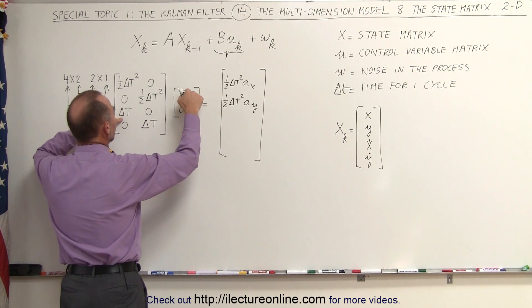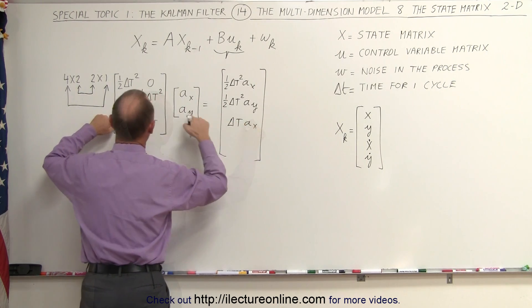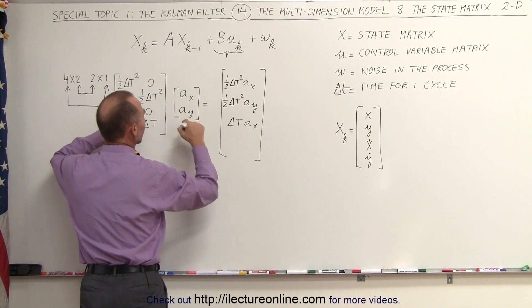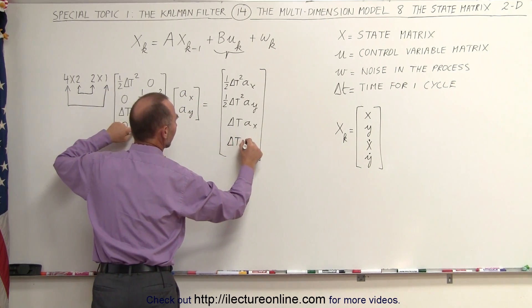Here we get delta t times a sub x and zero times a sub y, zero times a sub x, delta t times a sub y.